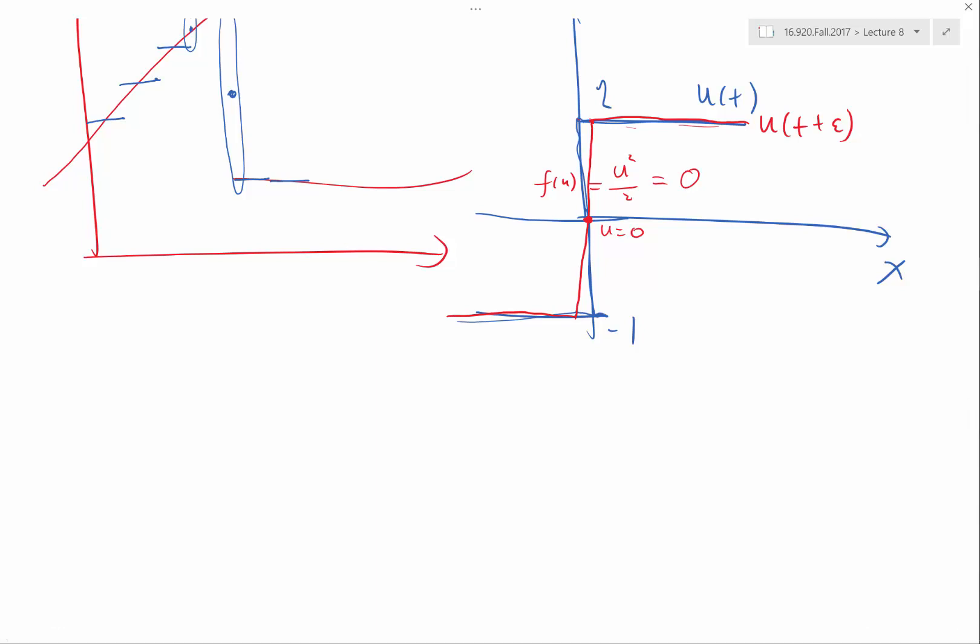So the flux we should be using in a finite volume scheme is the flux at t plus epsilon. If we are able to analyze the behavior of the discontinuity only for an absolute amount of time, we would be able to evaluate the flux. Does that make sense?